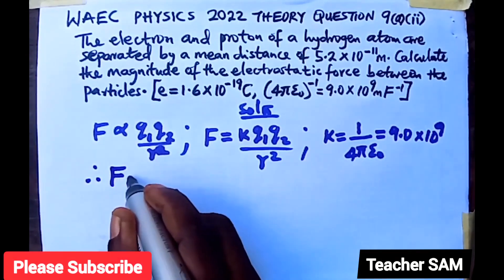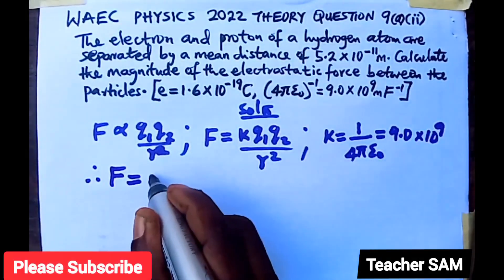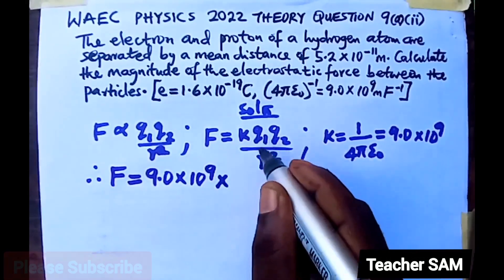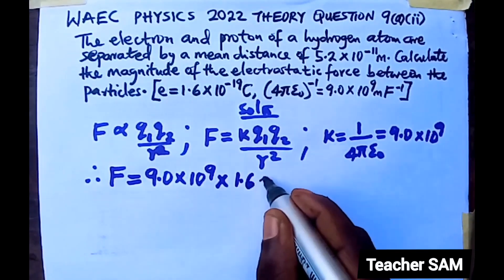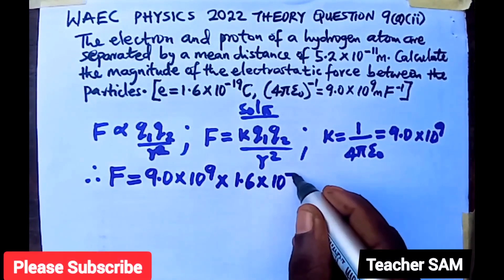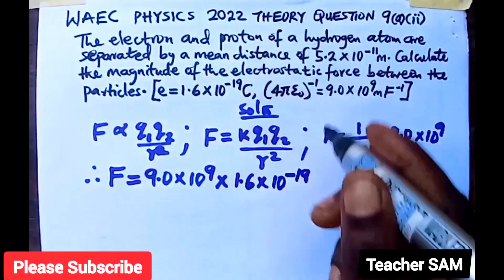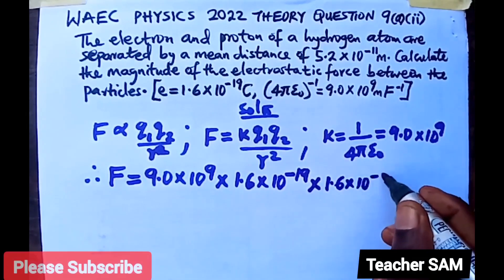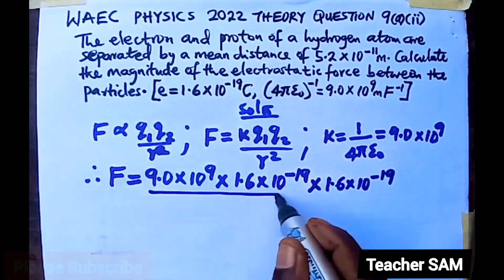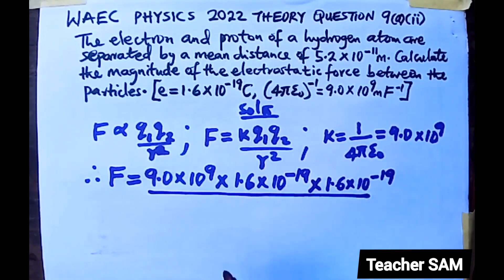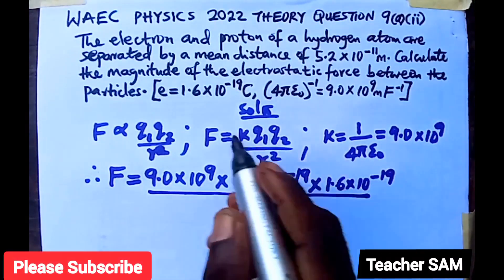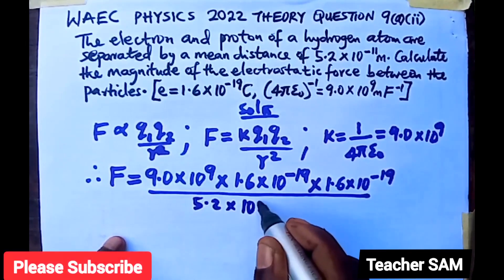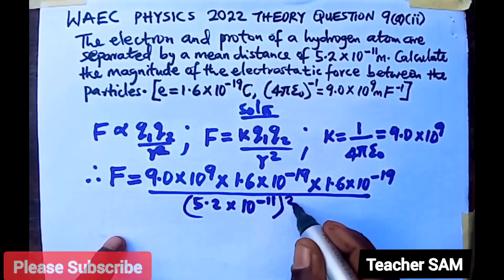Therefore, the magnitude of the force: K is 9.0 times 10 raised to power 9, times 1.6 times 10 raised to negative 19 for the electron, times 1.6 times 10 raised to negative 19 for the proton as well, all over the square of the distance, which is 5.2 times 10 raised to negative 11, squared.